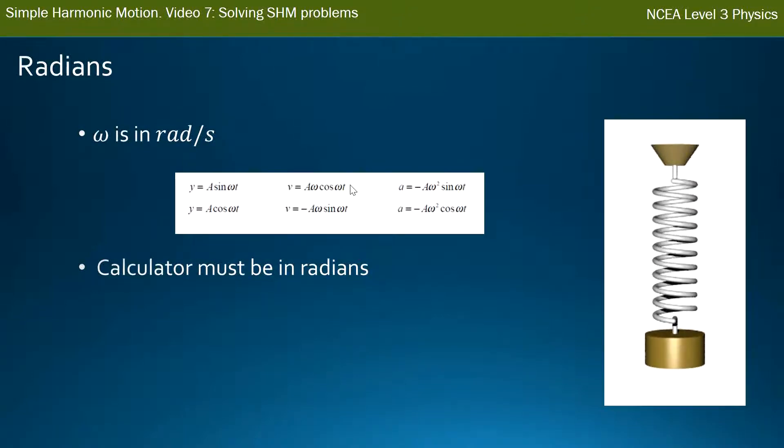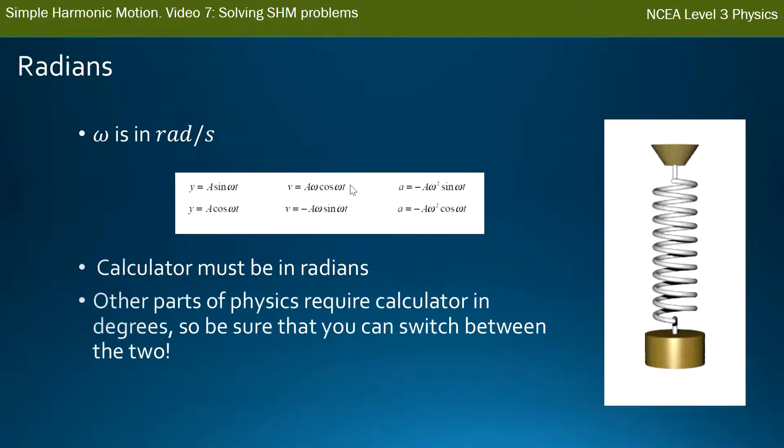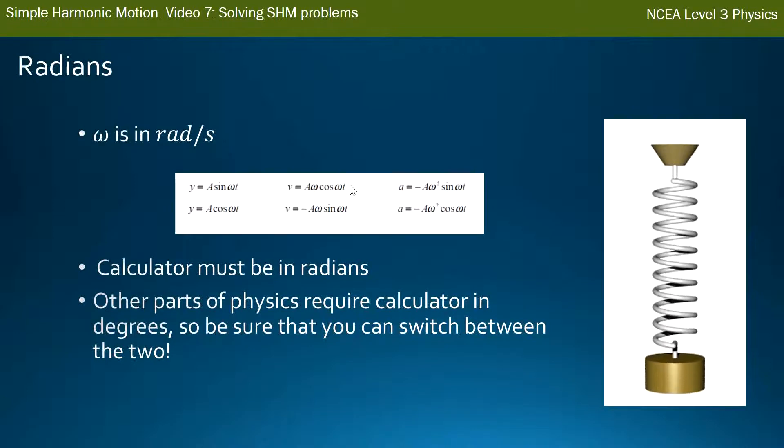Now the issue is that other parts of this physics course require your calculator to be in degrees. You have to work out components of forces, draw a triangle, and use an angle like 30 degrees with sine or cosine. So you have to be able to go back and forth between radians and degrees. Simple harmonic motion is always in radians, and the rest is in degrees. You have to know where it is on your calculator to switch between them. Make sure you ask your teacher if you're not sure how to do that.